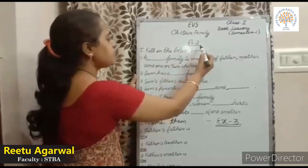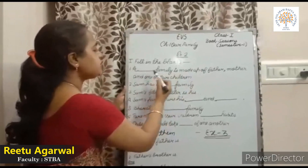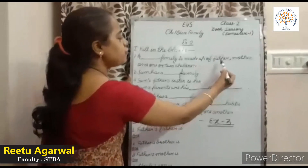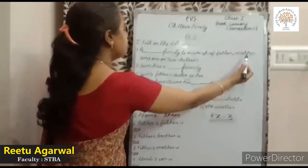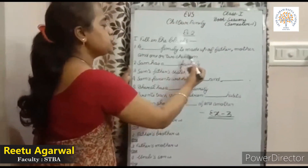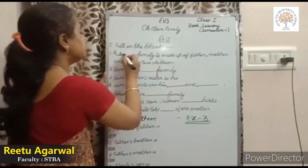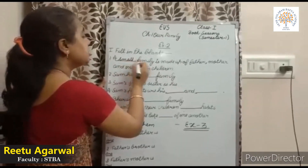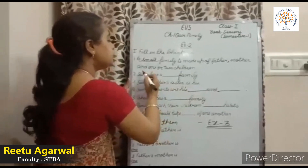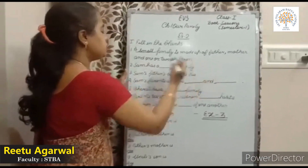Exercise 2: fill in the blanks. A blank family is made up of father, mother, and one or two children. A small family is made up of father, mother, and one or two children.